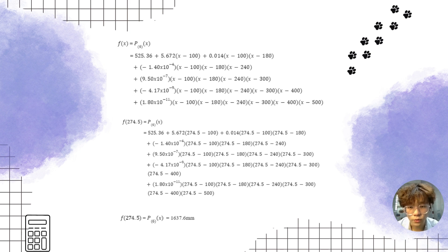Then, we will substitute the unknown variable x equals to 274.5. So, we will get the deflection of the beam when the support distance is at 274.5 meters and the deflection of our beam will be 1,637.6 millimeters.